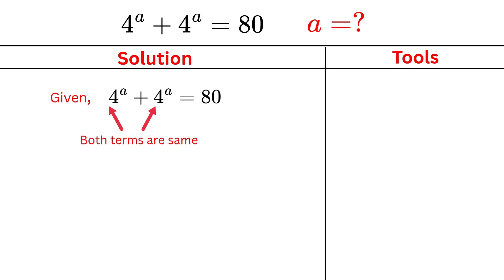Since both terms are the same, we can take 4^a as common. When we take it out, inside the bracket we are left with 1 + 1, because each term was divided by 4^a. This simplifies to 2 × 4^a, and this equals 80.